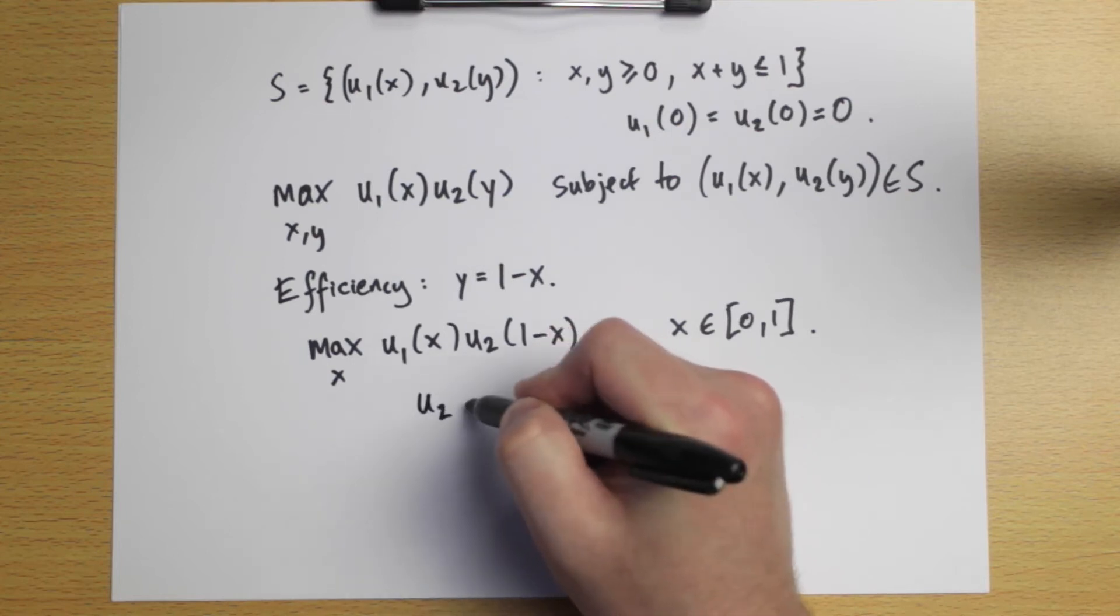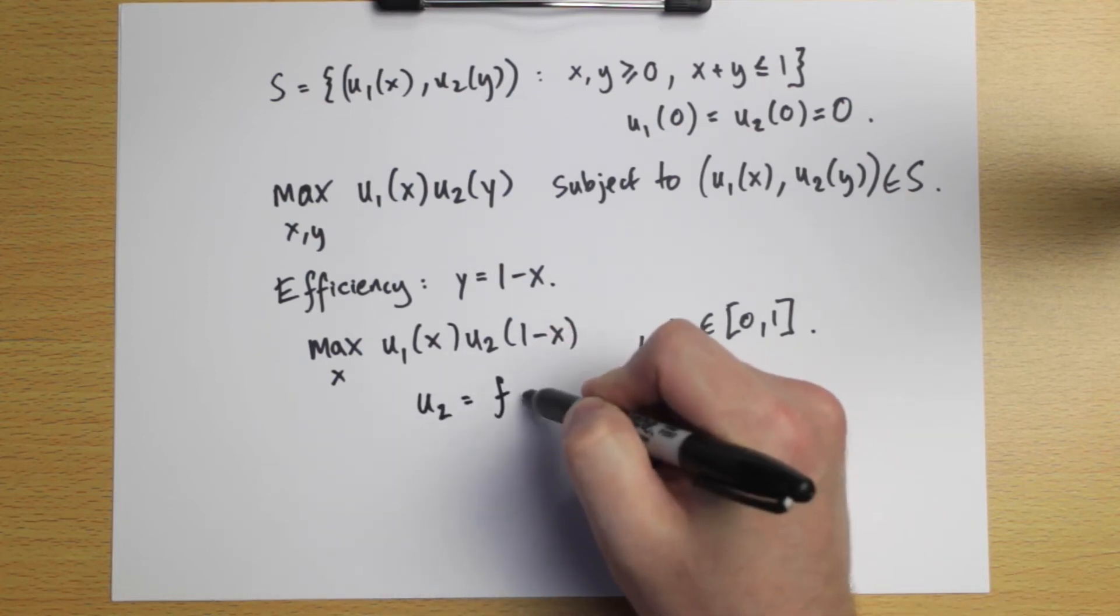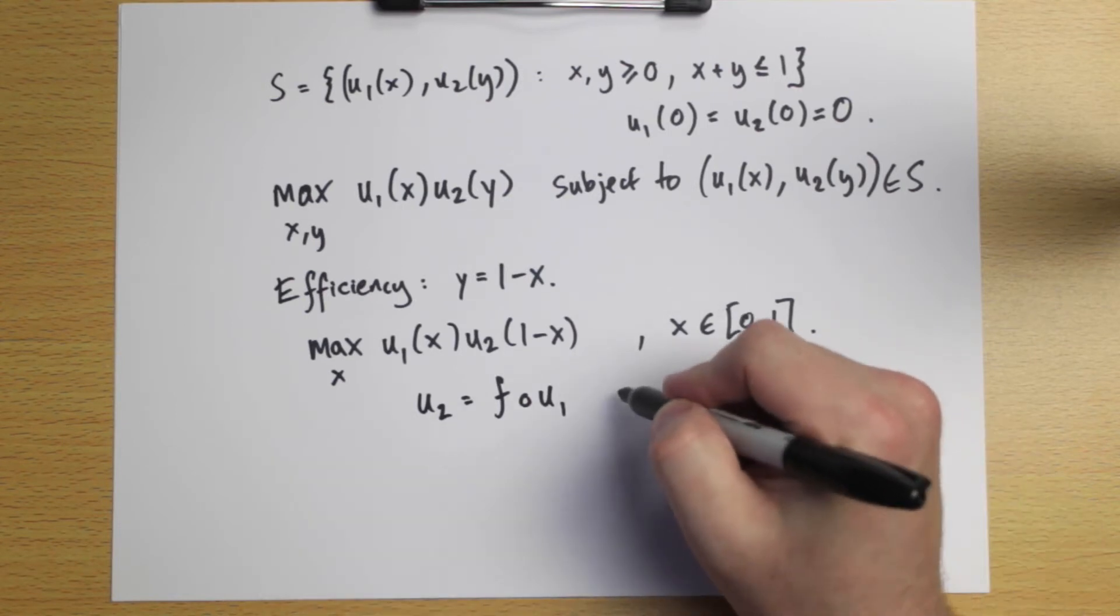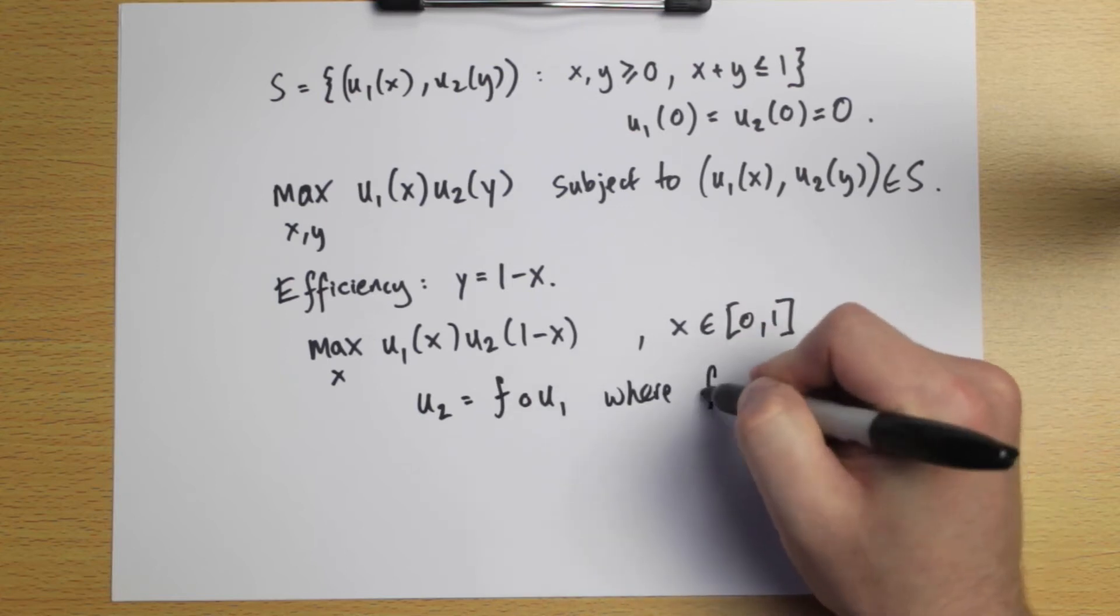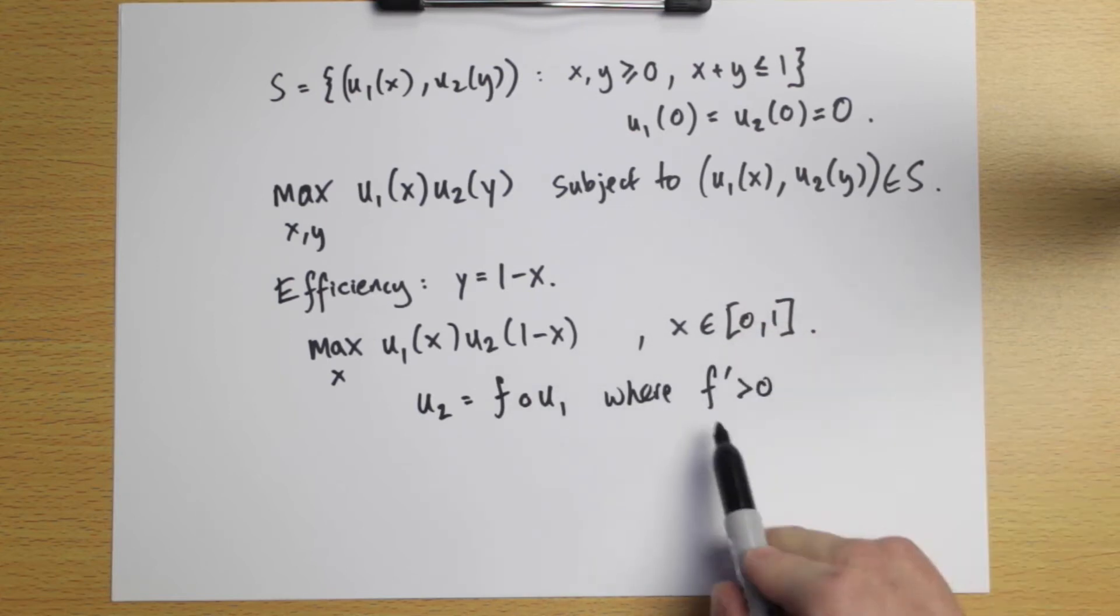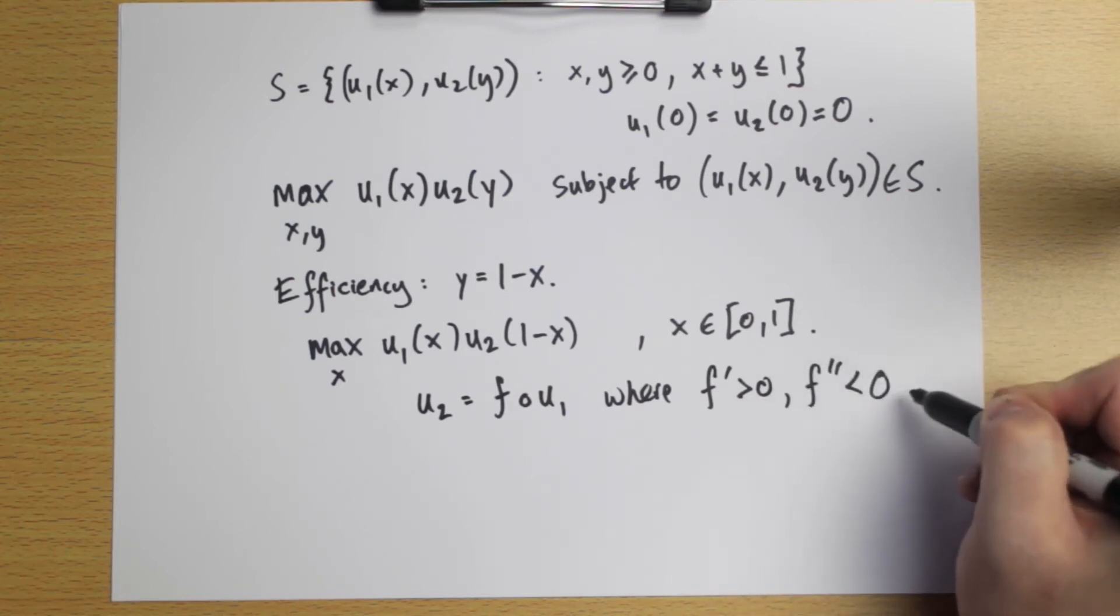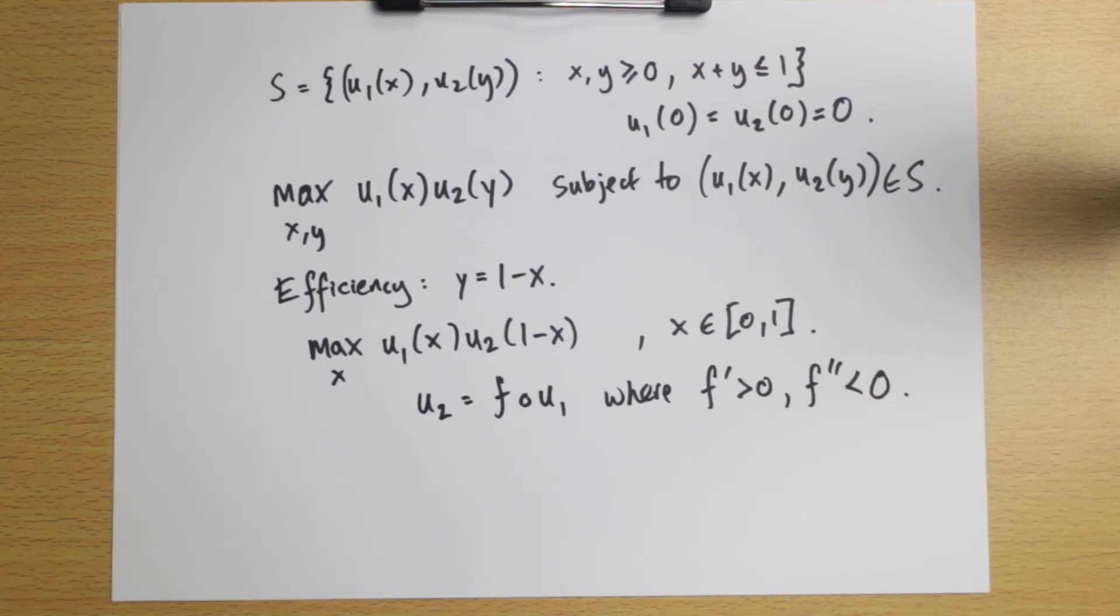How do we capture that mathematically? We'd say that the function U2 is some transformation, so it's F composed with the utility for player one, where this F is an increasing function, or strictly increasing, and strictly concave, so it has a negative second derivative. So we're assuming that F is smooth in this case. This would capture the idea that player two is more risk averse than player one. He's taken player one's utility function and made it more concave, so he's more risk averse.